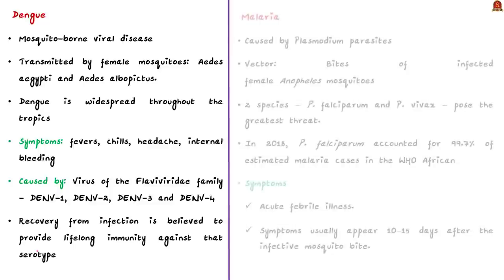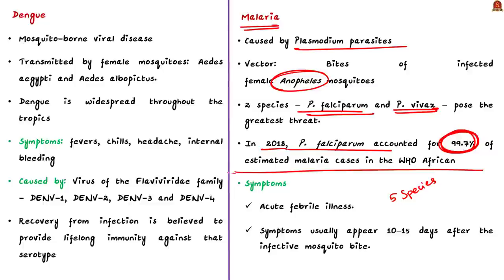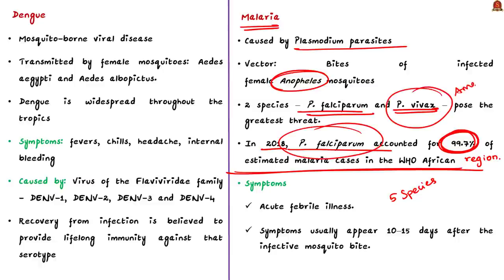Malaria is caused by Plasmodium parasites spread through the bite of female Anopheles mosquitoes. There are about five species that cause malaria in humans, but two are most important: Plasmodium falciparum and Plasmodium vivax. According to WHO, in 2018, Plasmodium falciparum accounted for about 99.7% of estimated malarial cases in the WHO African region and 50% of cases in the WHO Southeast Asian region. Plasmodium vivax is predominant in the Americas, accounting for about 75% of disease there.